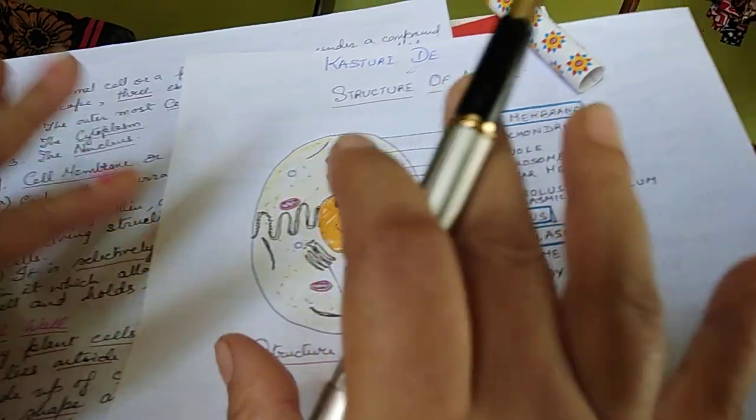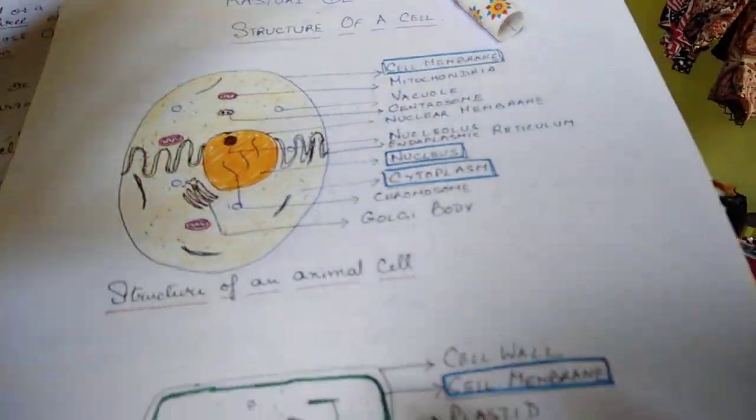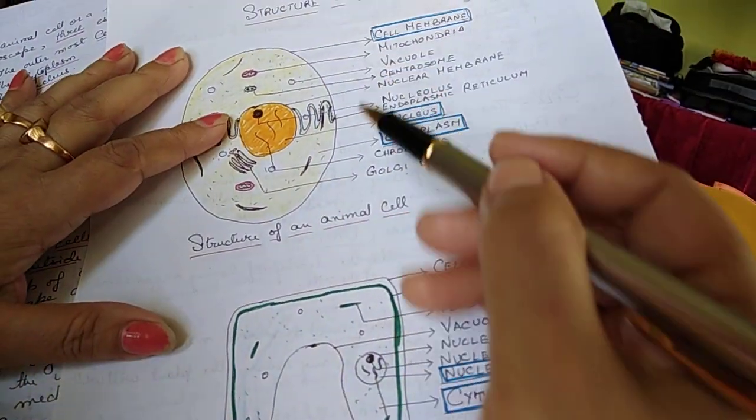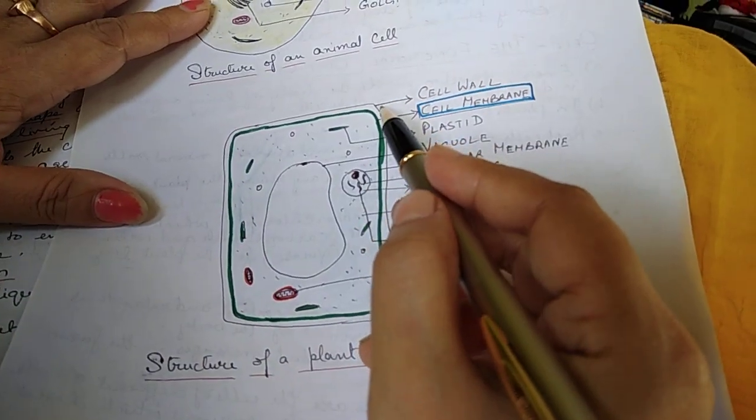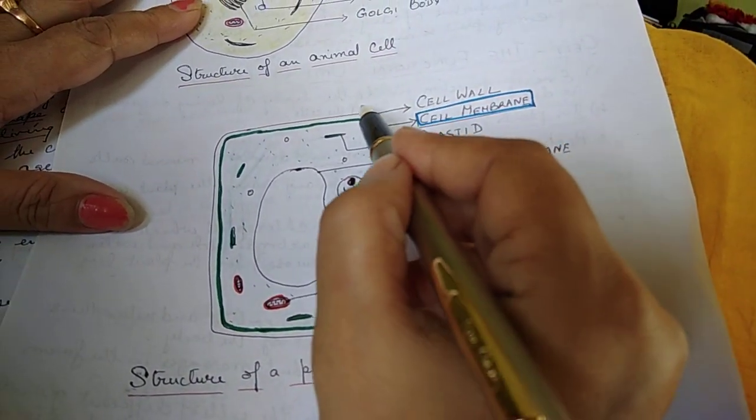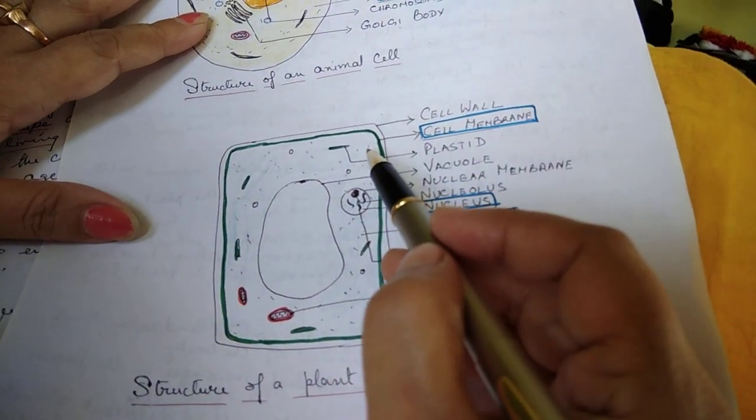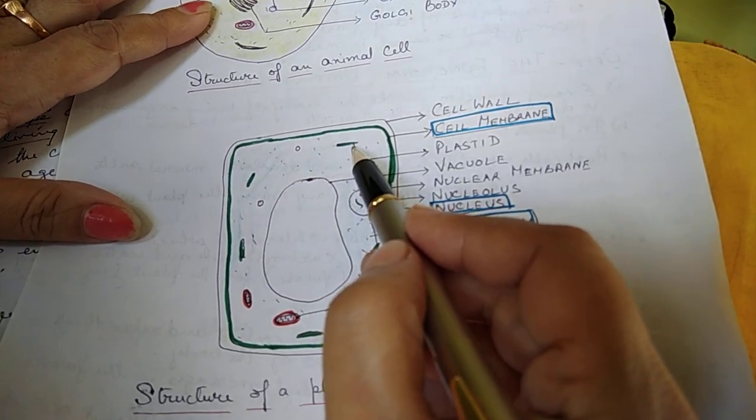Only the main difference between a plant cell and animal cell is that there's a cell wall outside the cell membrane of the plant cell. This is the cell membrane and this is the cell wall.